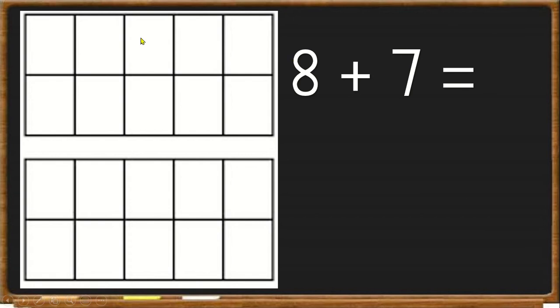So each number has its own 10 block. So for the number 8, I'm going to use the 10 block at the top, and I'm going to put in 8 counters. Then for the number 7, I'm going to put in 7 counters.